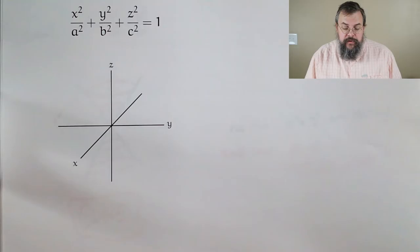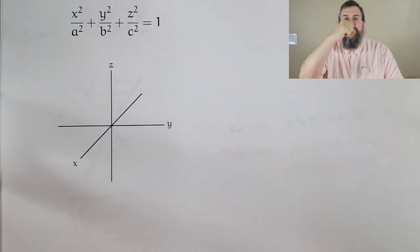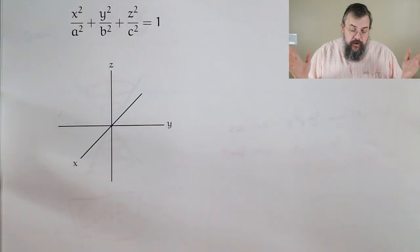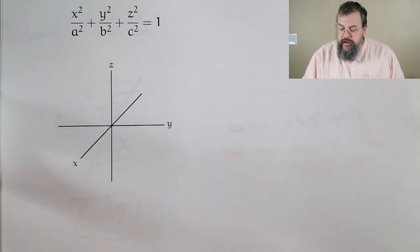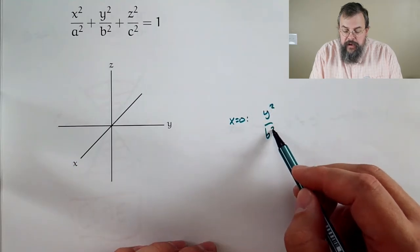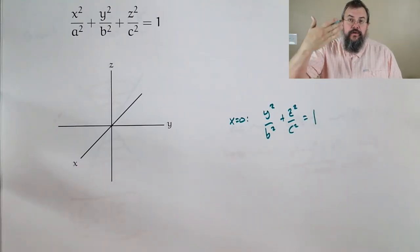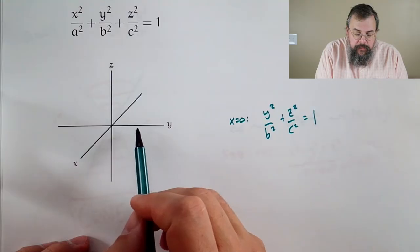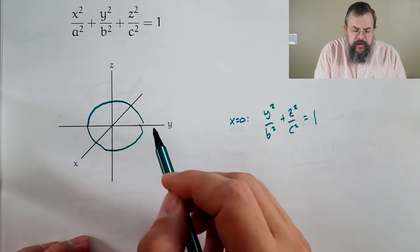Our next quadric: X squared over A squared plus Y squared over B squared plus Z squared over C squared equals 1. Think of A, B, and C as stretching in different directions. Let's focus on things where A, B, and C are 1 to get a picture. Let's think about our cross sections. Setting X equals 0, we get Y squared over B squared plus Z squared over C squared equals 1, which says when I slice perpendicular to the X axis, the shape coming out is an ellipse.